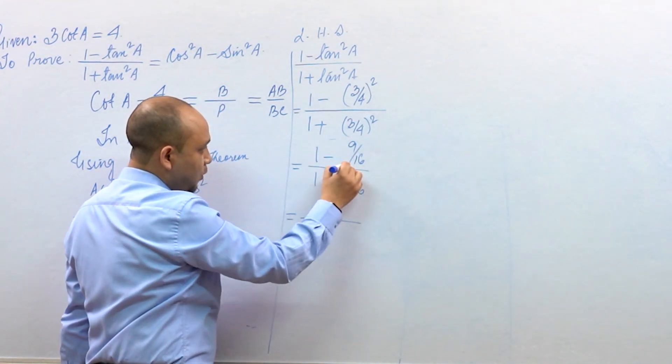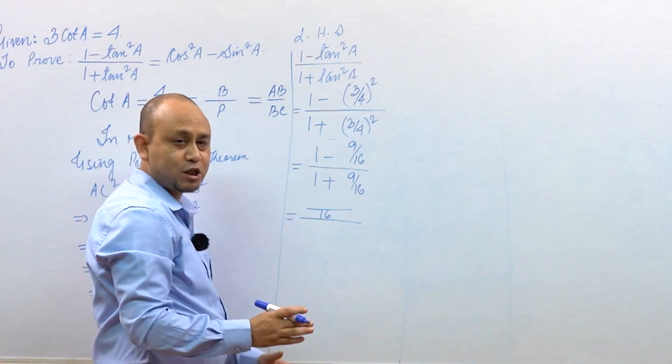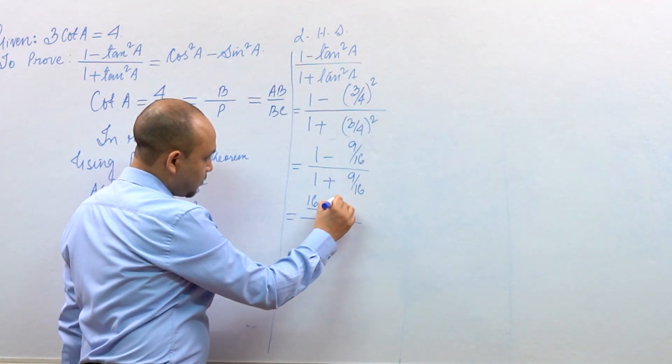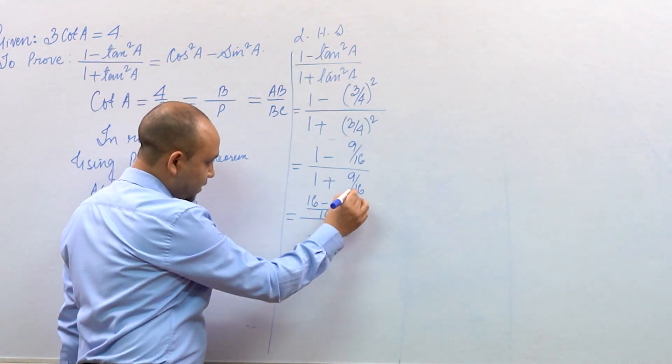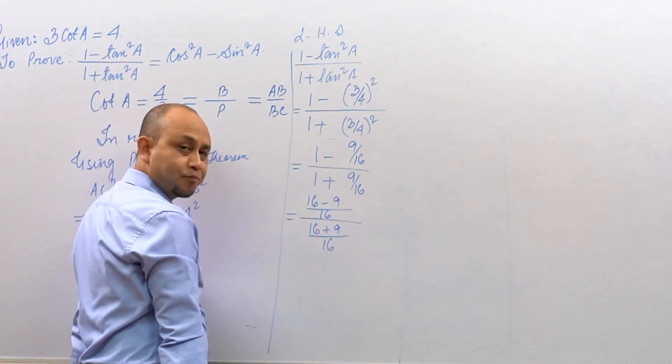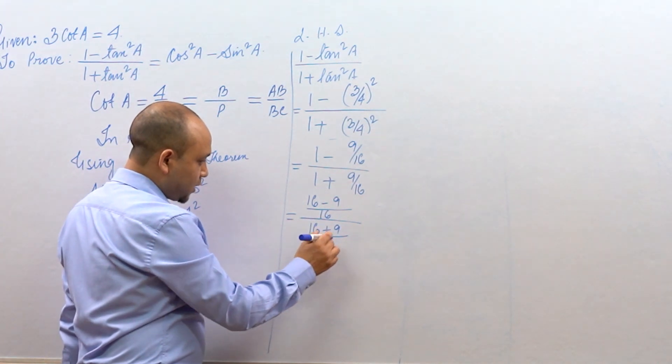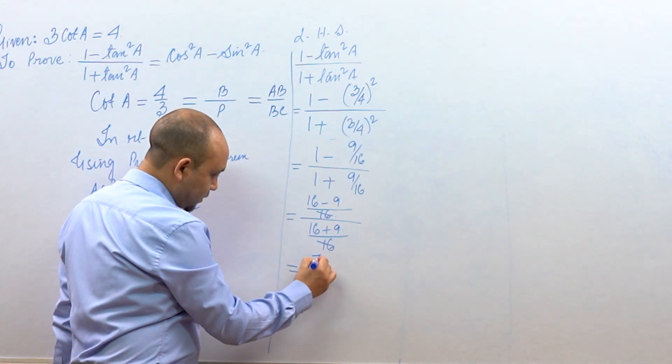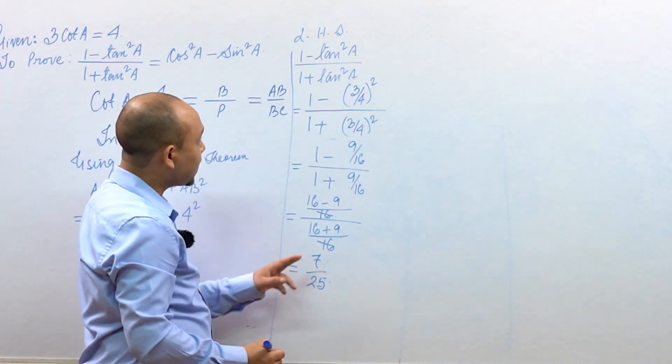In the numerator, taking LCM, the LCM is 16. So 16 times 1 minus 9 in the numerator. Denominator: 16 into 1 plus 9. The LCM in denominator cancels. 16 minus 9 is 7, 16 plus 9 is 25.